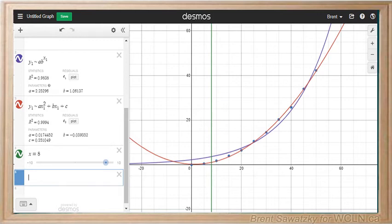That is x equals 8 is amongst the domain of our collected data.